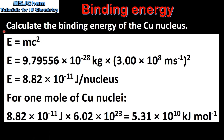In our next example we'll calculate the binding energy of the copper nucleus. Once again we use the equation E equals MC squared. The mass defect of a copper nucleus is 9.79556 times 10 to the negative 28 kilograms, and we multiply this by the speed of light squared, which gives us a binding energy of 8.82 times 10 to the negative 11 joules per nucleus. For 1 mole of copper nuclei we multiply the value for 1 nucleus by the Avogadro constant to give us 5.31 times 10 to the 10 kilojoules per mole.